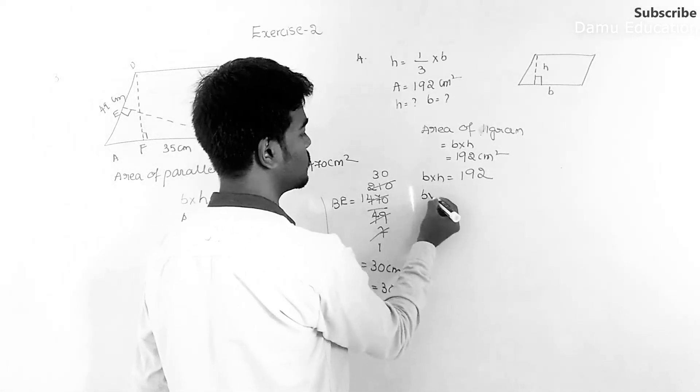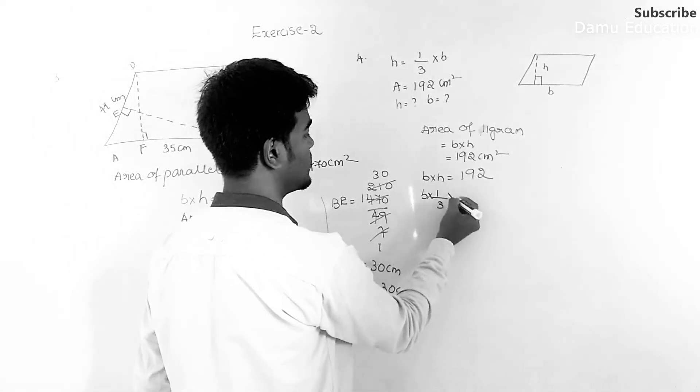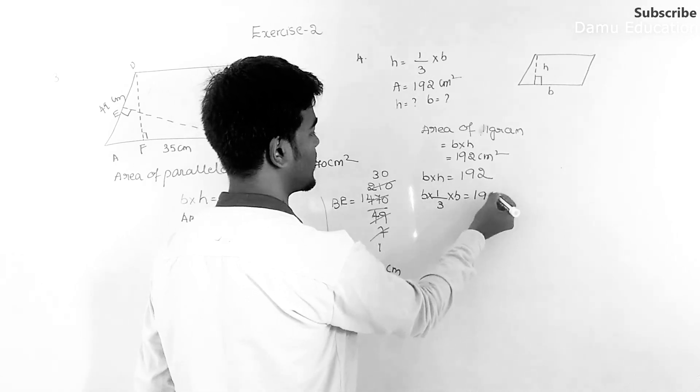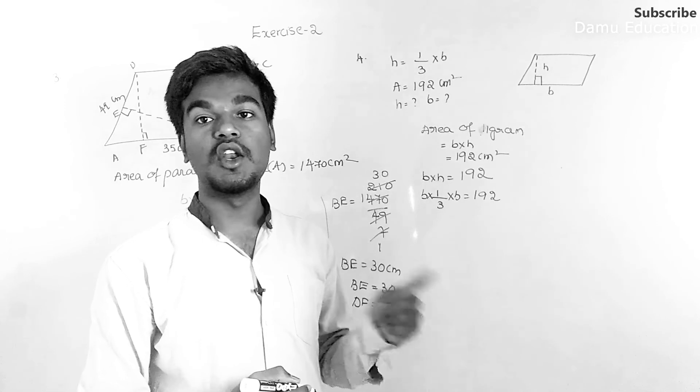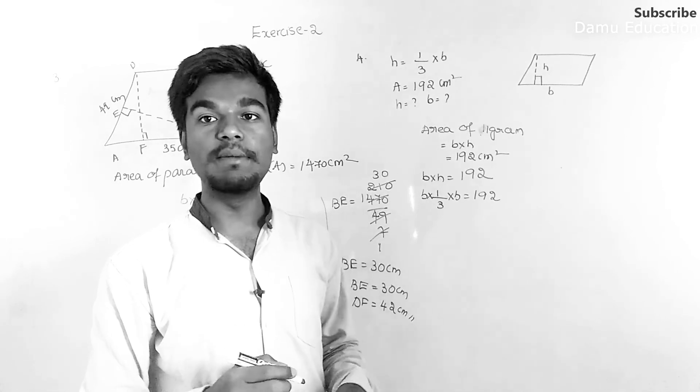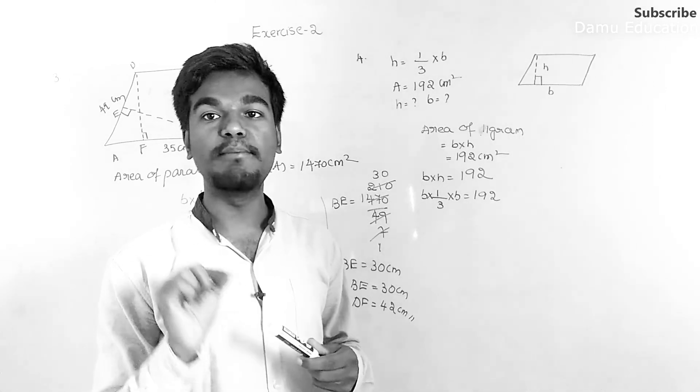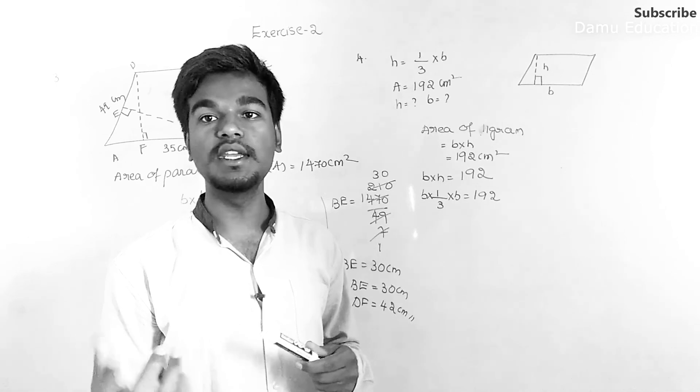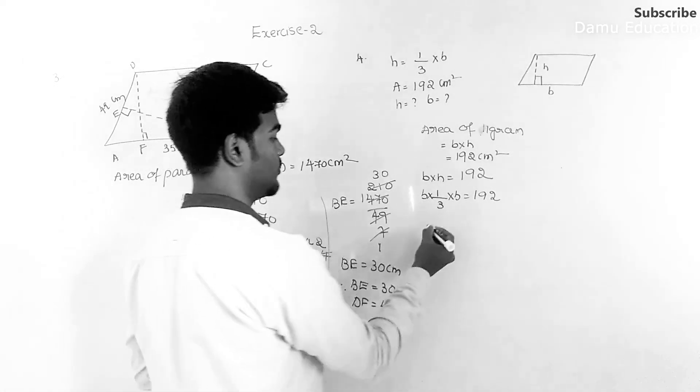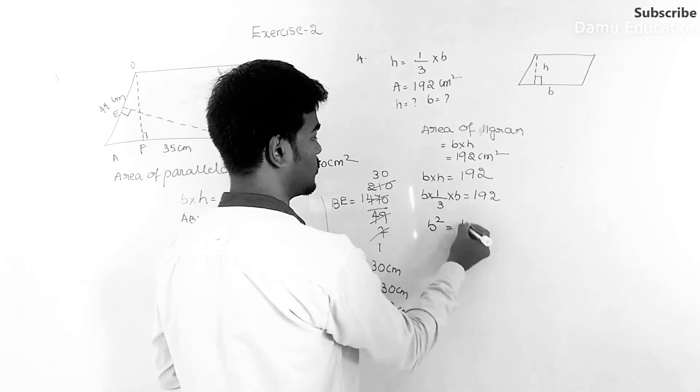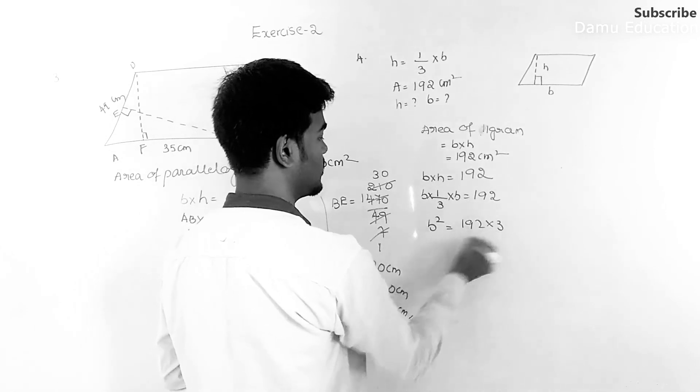B into 1/3 into B, that will be equal to 192. So B into B will become B squared, not 2B. B into B is B squared. So B squared equals 192 into 3.